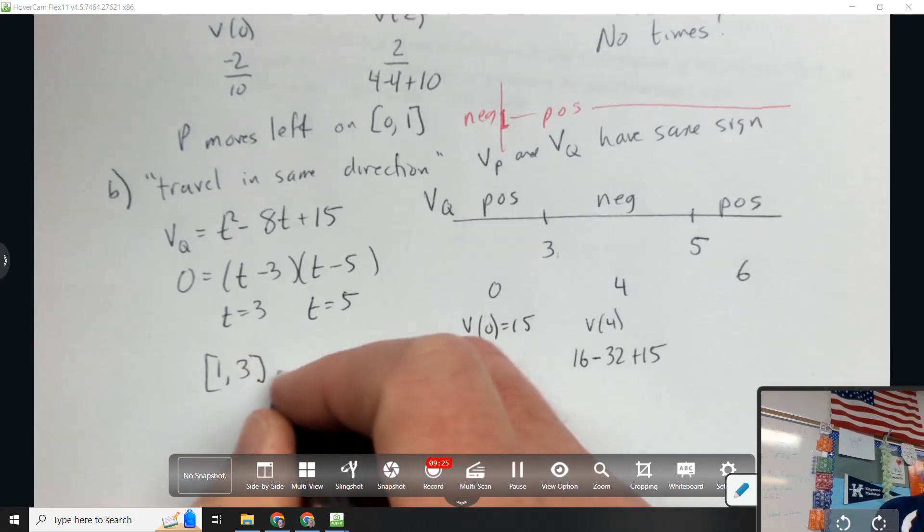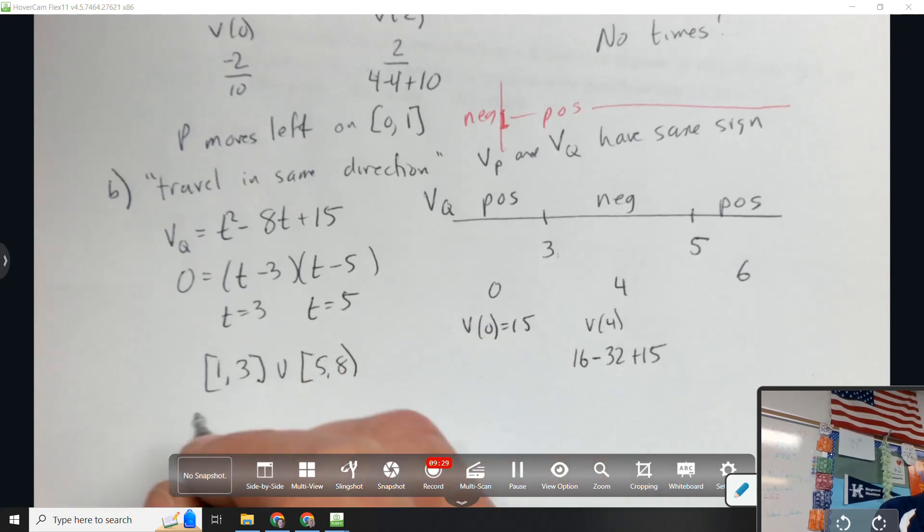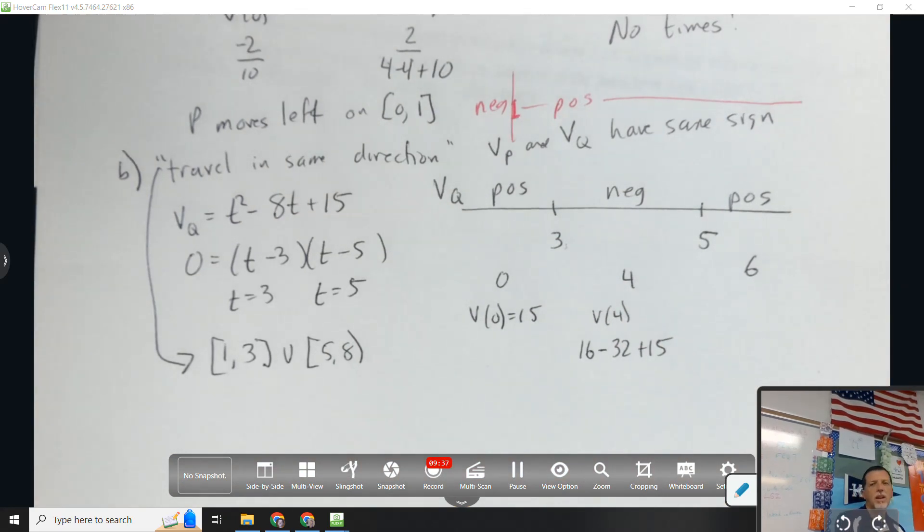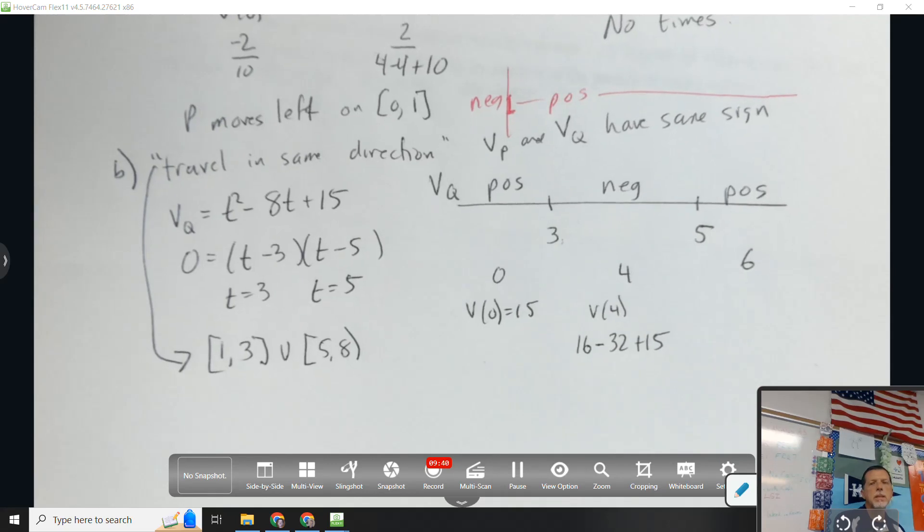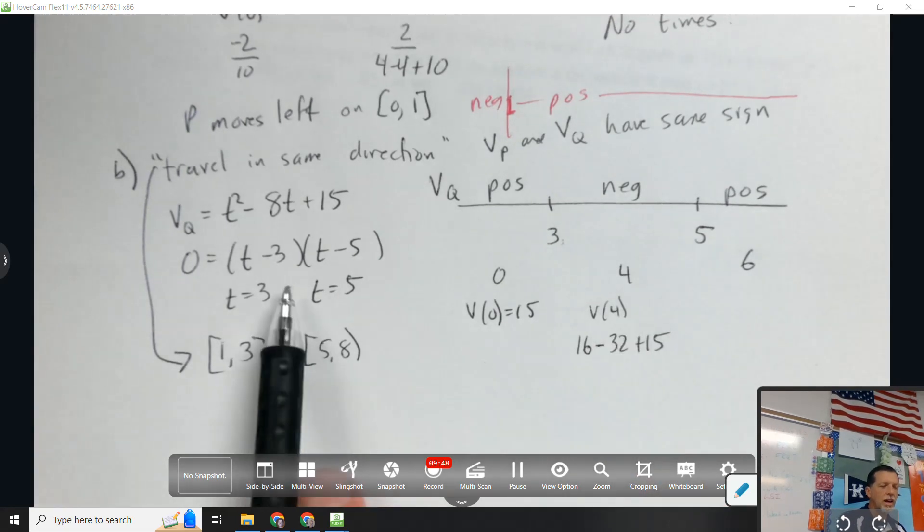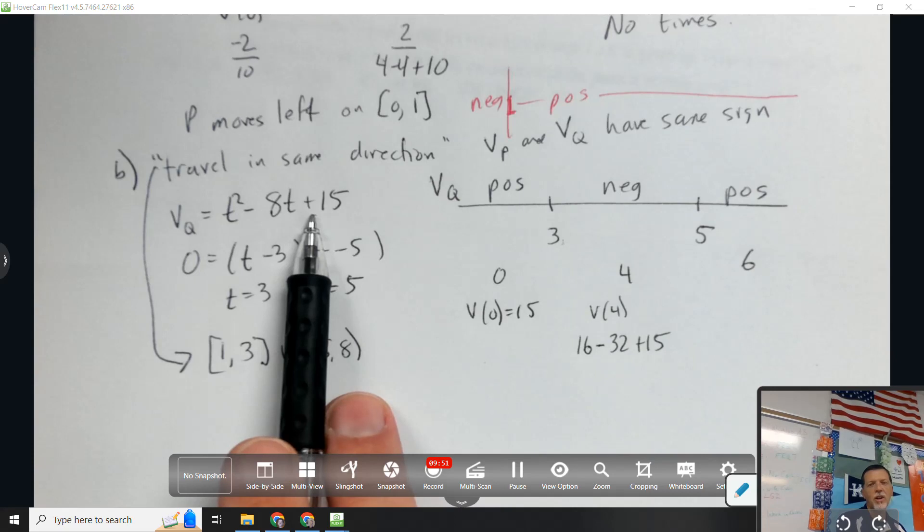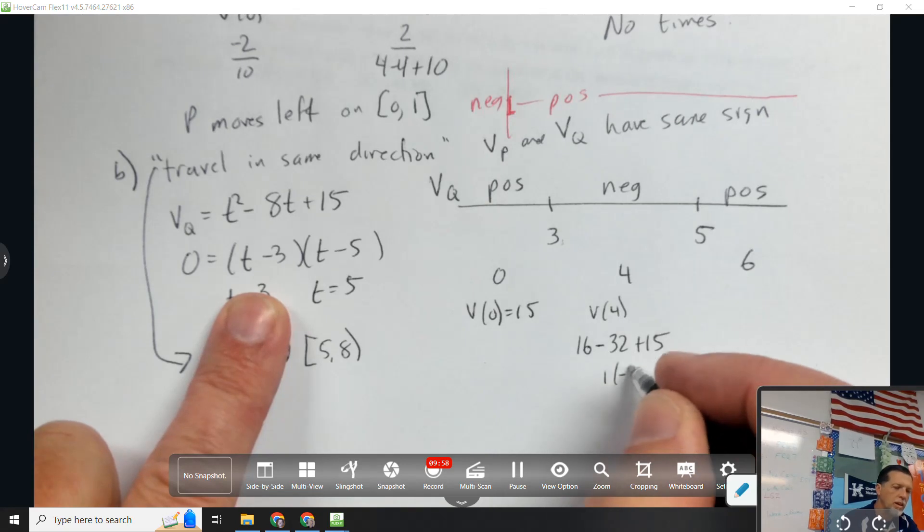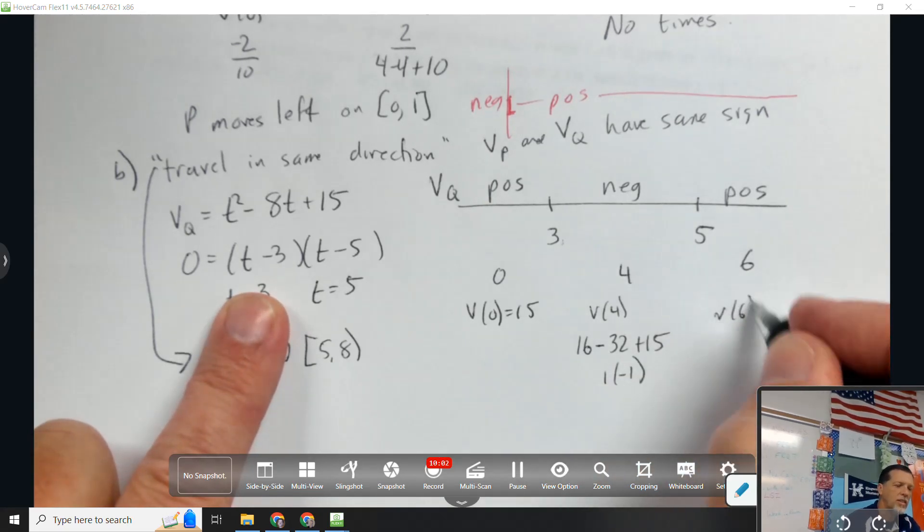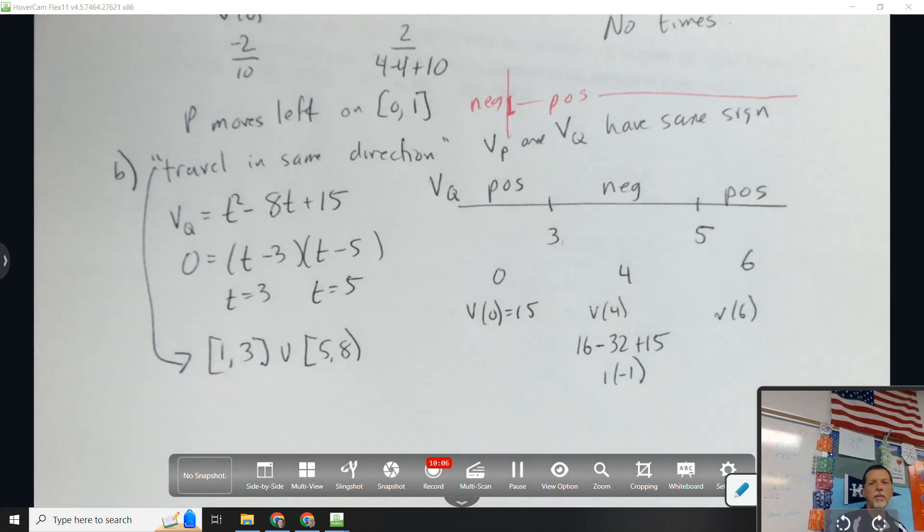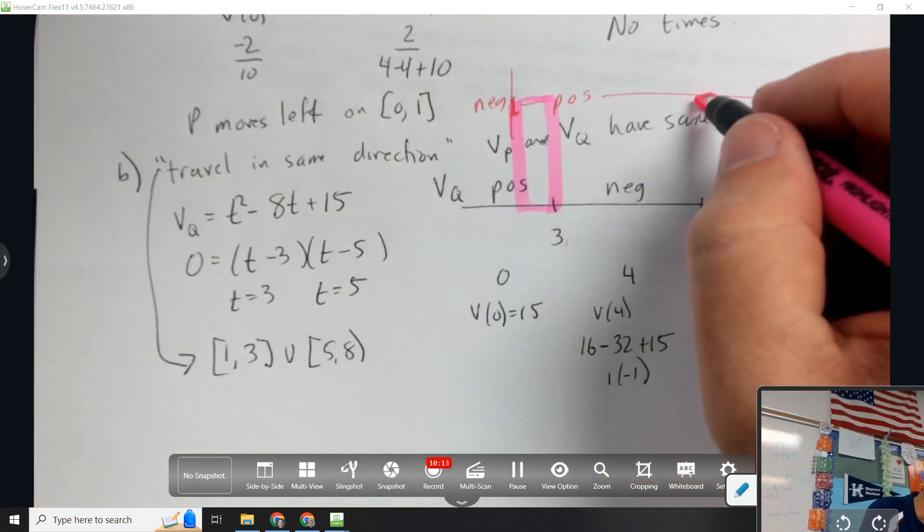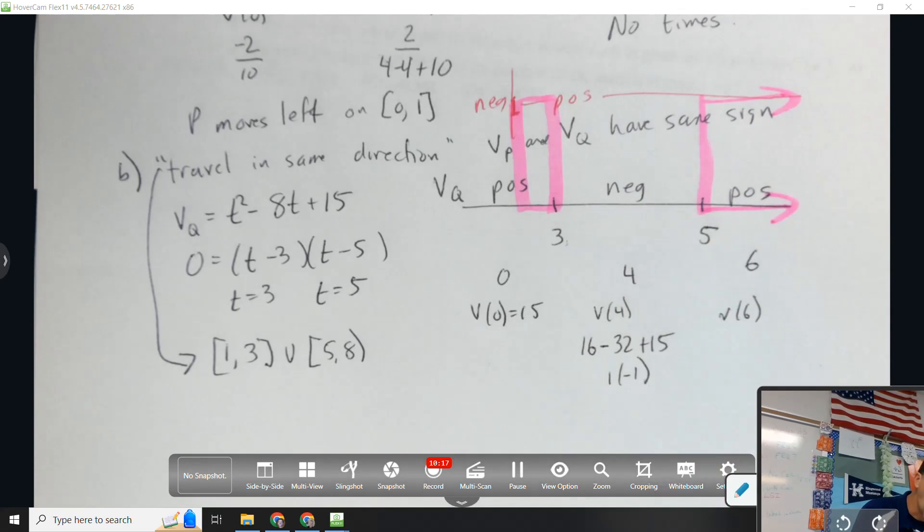V(0) would be 15. V(4) should be negative: 16 - 32 + 15, 16 and 15 is 31 minus 32 is negative, barely, but negative. The last one will be positive. So at 1, V_P is negative, and then after that is positive. They have the same sign from 1 to 3 and 5 to 8. So 1 to 3 and 5 to 8, they travel in the same direction.